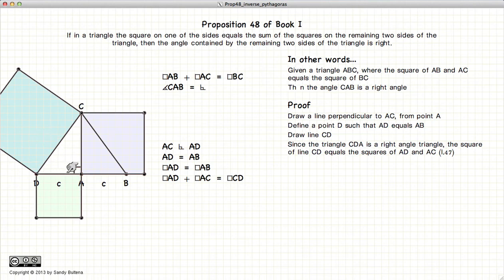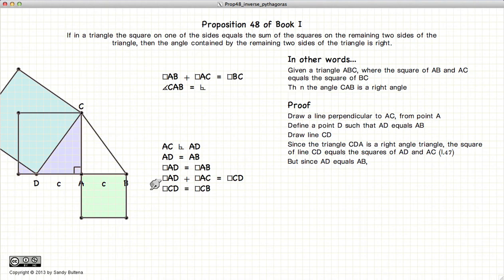But since this length is length C and this is length C, then the square of DA is also equal to the square of AB. And obviously, this square of this line doesn't matter where you draw it.